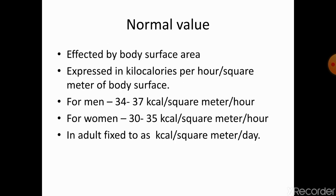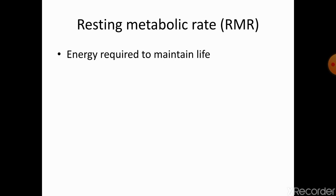The normal value of BMR is affected by body surface area. BMR is expressed in kilocalories per hour per square meter of body surface area. For men it is 34 to 37, and for women it is 30 to 35 kcal per square meter per hour. The related term resting metabolic rate (RMR) is the energy required to maintain life.